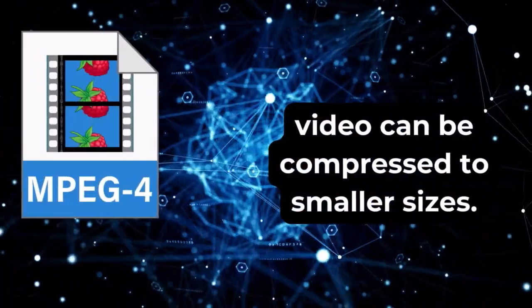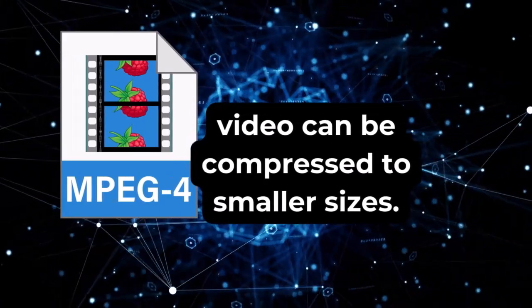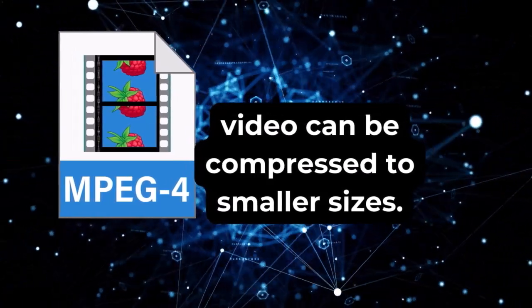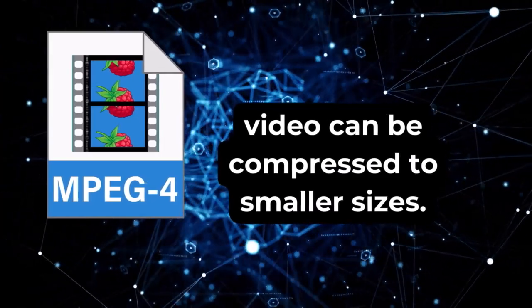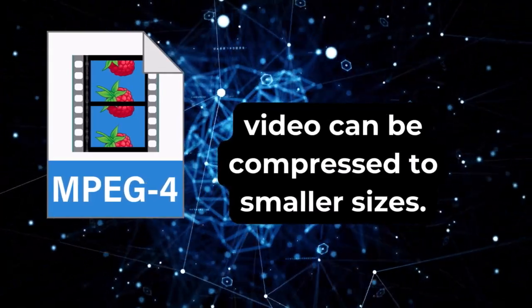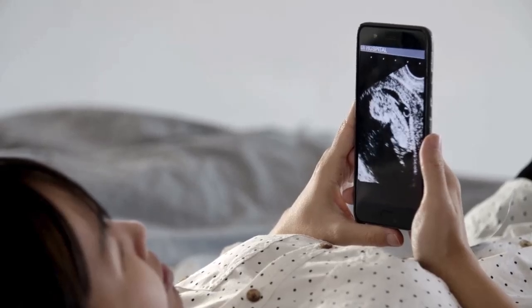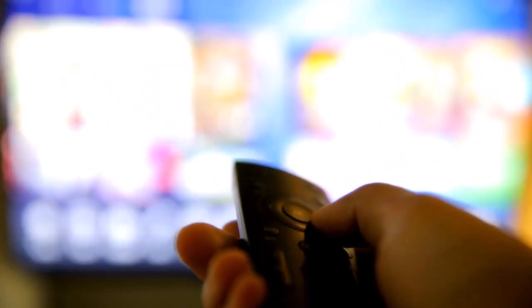The main advantage of MPEG-4 is that video can be compressed to smaller sizes. To get smaller file sizes, a lower bitrate has to be used, which results in lower video quality. Quality loss isn't noticeable on smaller screens like on mobile phones. However, it's noticeable on larger TV screens.